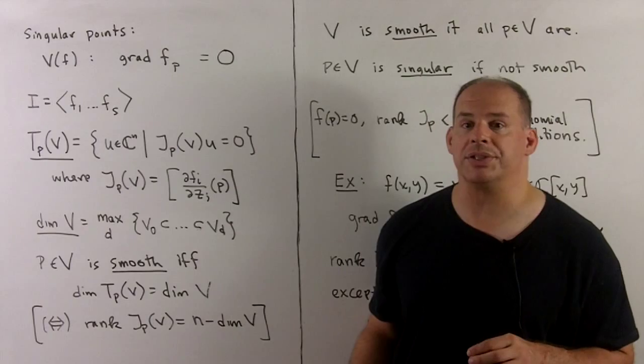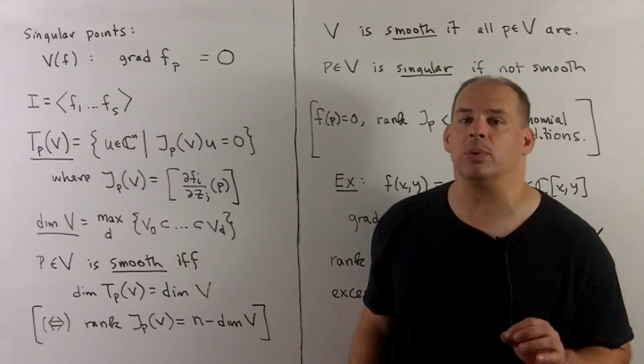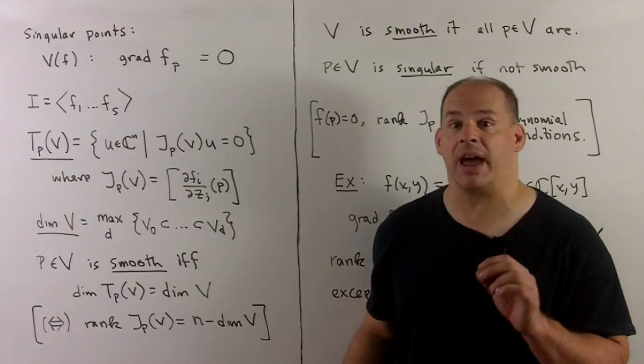What about singular points? If our variety is defined by a single polynomial, then we're just checking where the gradient is equal to zero, and with our definition, the tangent space is everything.